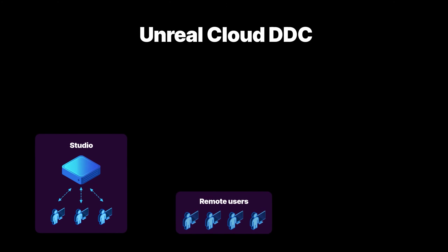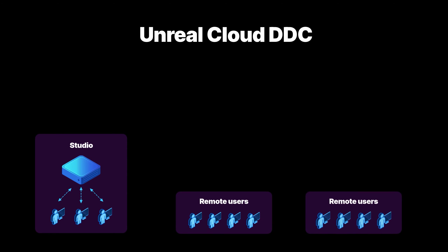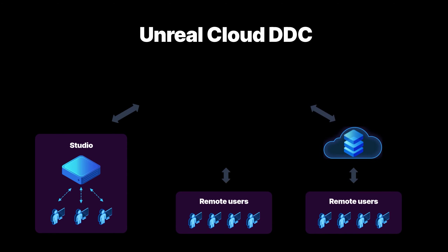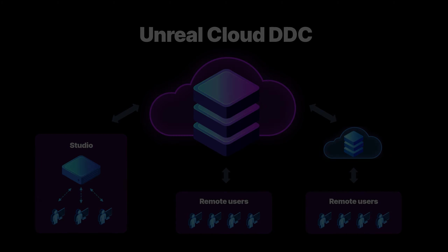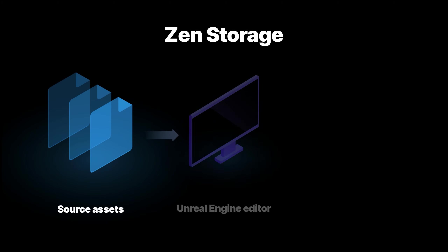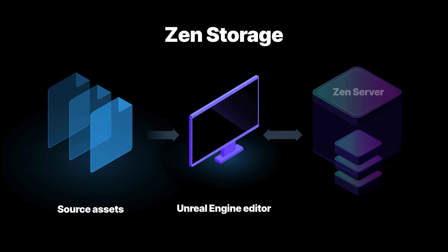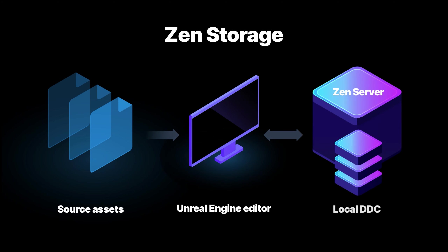New in this release is Unreal Cloud DDC, a self-hosted cloud storage system for the Unreal Engine derived data cache. Designed for distributed users and teams, it enables you to efficiently share Unreal Engine cached data across public network connections. Our local DDC also now uses a new server architecture, offering improved data conditioning performance, faster load times in CI workflows, and other benefits.